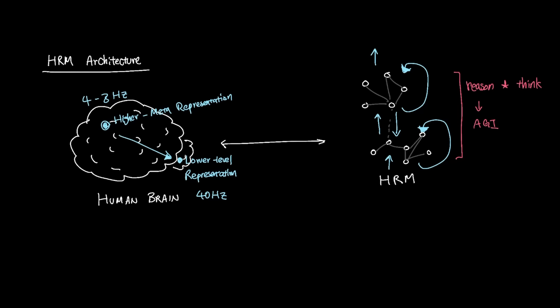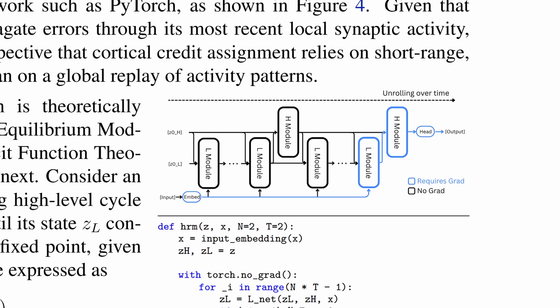All in all, HRM demonstrated that by only using a thousand examples of data, it was able to show its ability to learn and reason. However, the biggest innovation for this that led to HRM's success seems to be the outer refinement loop, where the model feeds the bursts of thinking into lower module by the higher module to iteratively make adjustments for better answers.